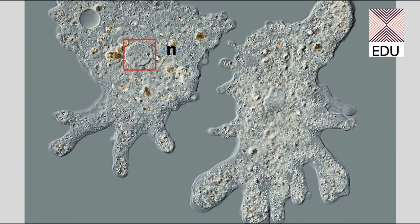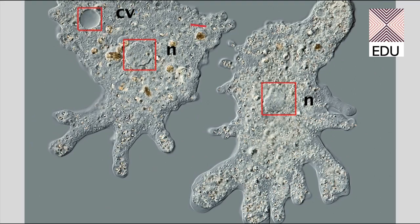This bulged part is the nucleus of the first amoeba, and this is the nucleus of the second amoeba. If you see this crater-like structure — similar to craters on the moon — this is a contractile vacuole which is filling with water and throwing it out. This structure here is a food vacuole having some food in it. These other structures are also food vacuoles.